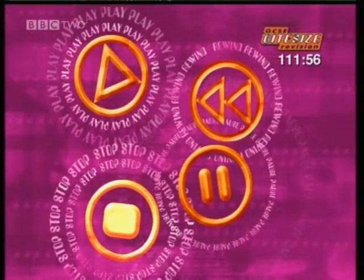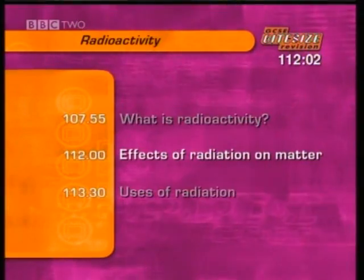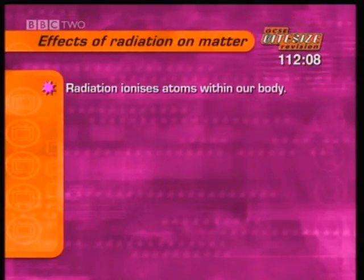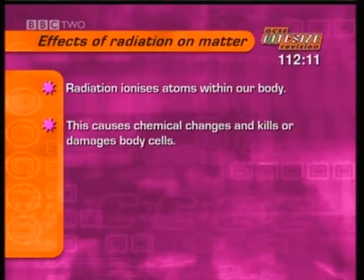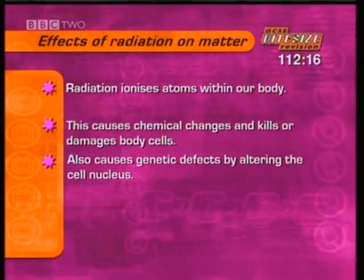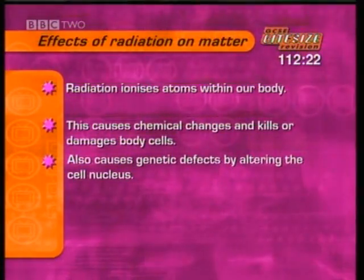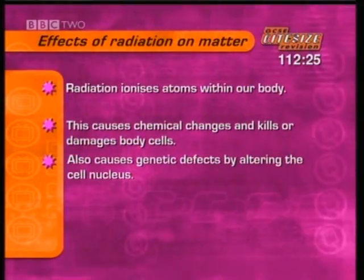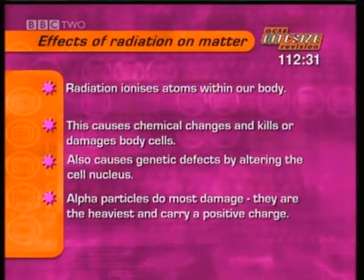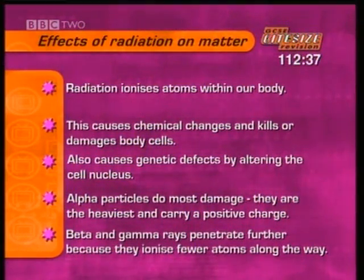That's the end of the section on what is radioactivity. Next, the effects of radiation on matter. If radiation enters our bodies, it ionises atoms within our body, causing chemical changes and killing or damaging body cells. This can also cause genetic defects, as radiation can alter the cell nucleus, changing the instructions for making new life so children can be born with handicaps. Alpha particles do the most damage as they are the heaviest and carry a positive charge, while beta and gamma rays penetrate further because they ionise fewer atoms along the way.